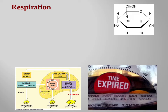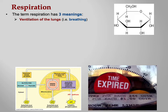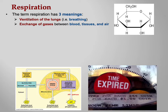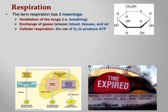Let's talk about the term 'respiration' — three different meanings, although they're all closely connected. First: ventilation of the lungs, meaning breathing in and breathing out. Second: exchange of gases between blood, tissues, and air — oxygen comes from outside air through our lungs into our blood; carbon dioxide leaves our blood, enters our lungs, and is exhaled. Third: cellular respiration — oxidative phosphorylation, the electron transport chain — oxygen and glucose make ATP.